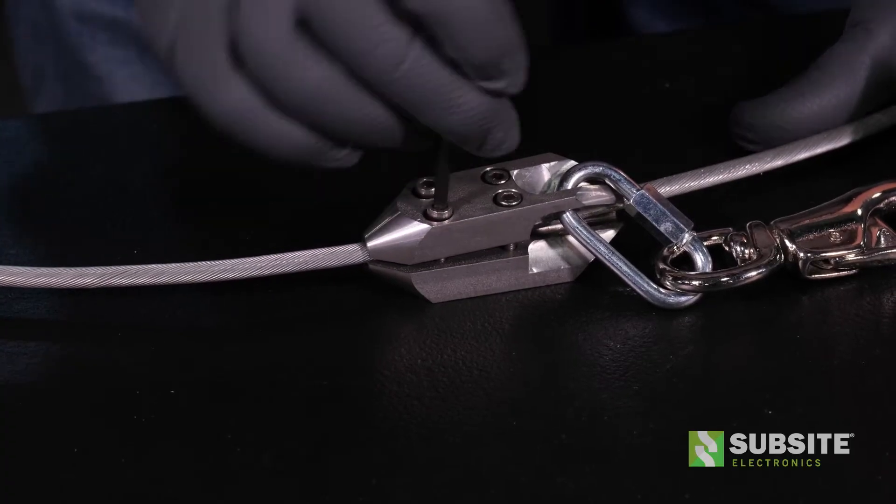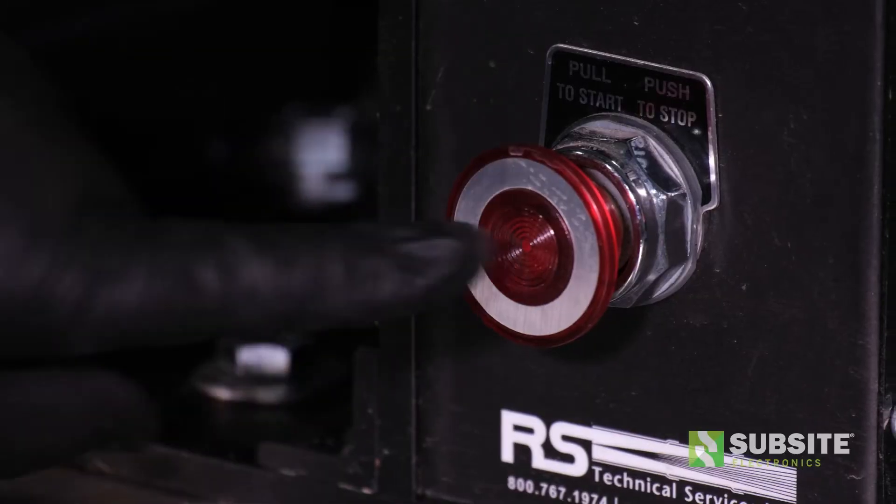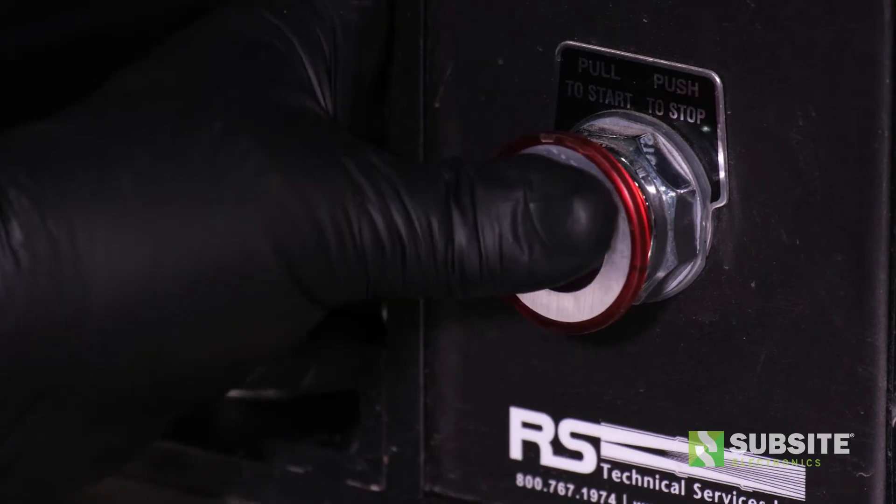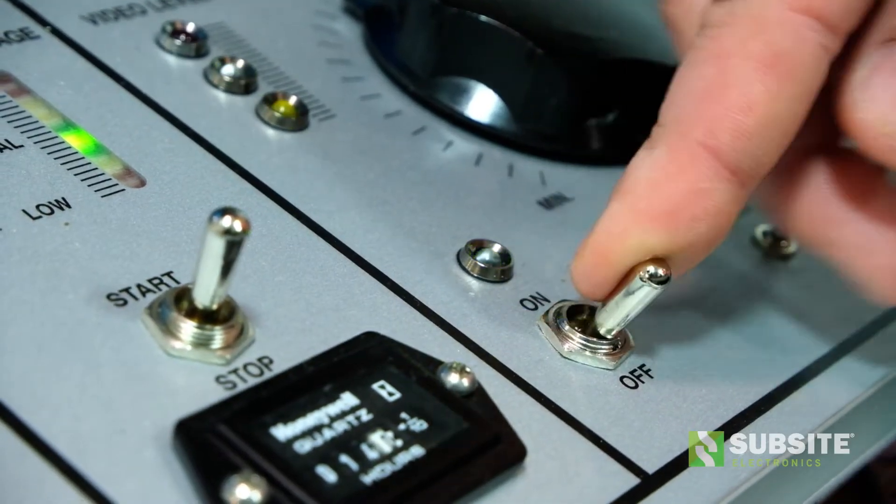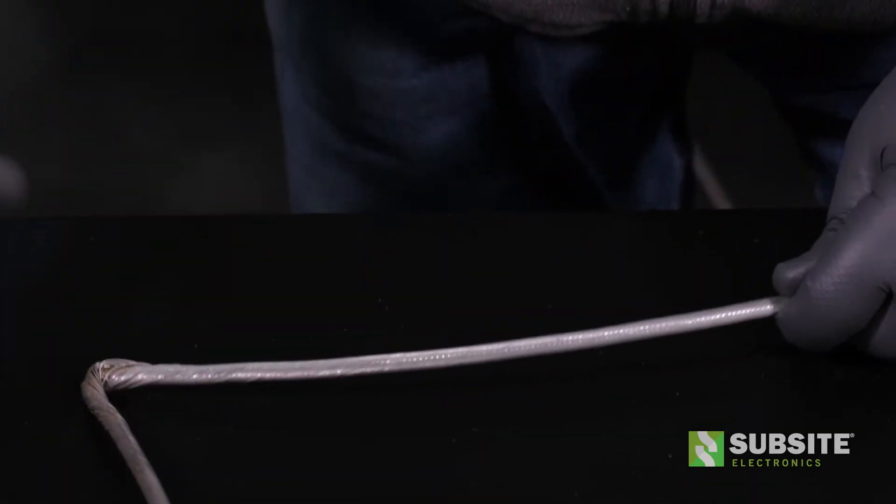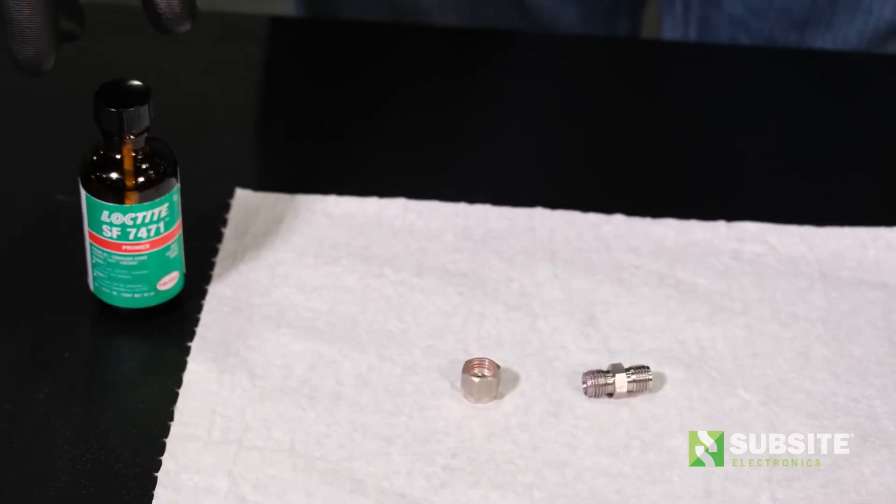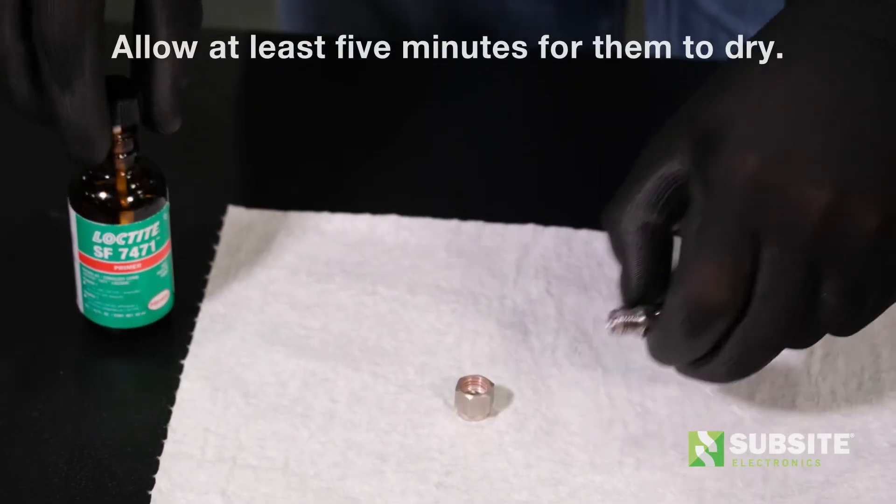Now, remove the cable grip using the 5/32nds Allen wrench. Press the e-stop button to power off the reel and then power off the controller. Clean and prep the cable. Use a shop towel to wipe the cable clean. If there's more significant debris, use a small steel brush to remove it. Apply Loctite primer to the threads on the ferrule body and nut.